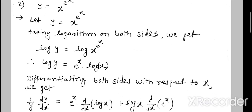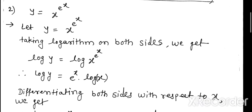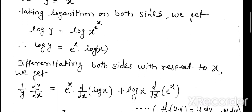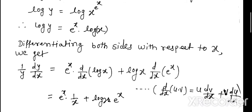Now solve the second question: y equals x to the power e to the power x. This is similar to the first question. We take logarithm on both sides: log y equals log of x to the power e^x, which gives e^x into log x. Now we differentiate both sides: 1/y · dy/dx on the left.